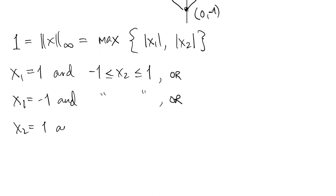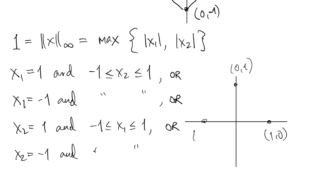Once again, there are four possibilities. Each of those possibilities is a horizontal or vertical line. So when you put all these together, you end up with a square. This time, the edges of the square are parallel to the axes.